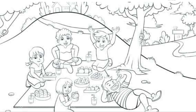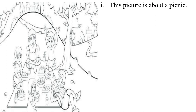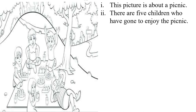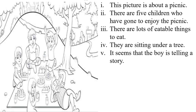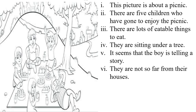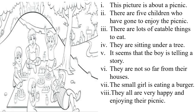Here is your first picture. Let's write about it. This picture is about a picnic. There are five children who have gone to enjoy the picnic. There are lots of eatable things to eat. They are sitting under a tree. It seems that the boy is telling a story. They are not so far from their houses. The small girl is eating a burger. They all are very happy and enjoying their picnic.